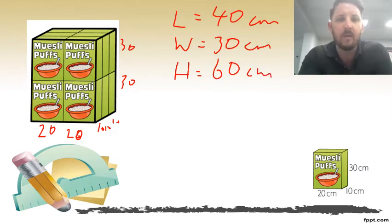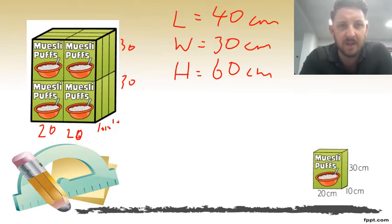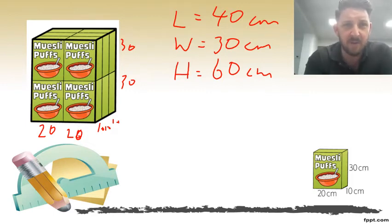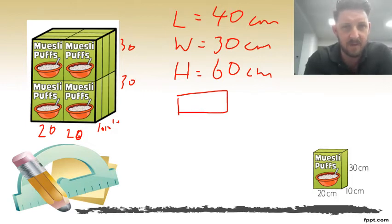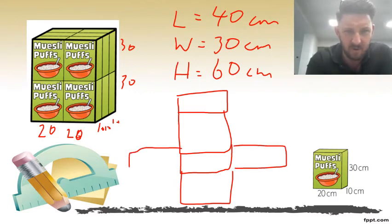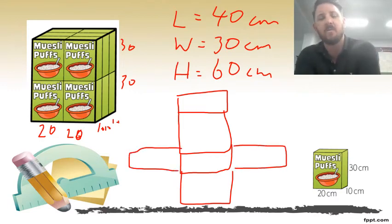Now stop the video and draw the net of this shape. You should have six different rectangles because this is a rectangular prism. The net has one very small square, then one very long one, another very small one, and another very long one. Off the smaller ones, there are two rectangles on each side.